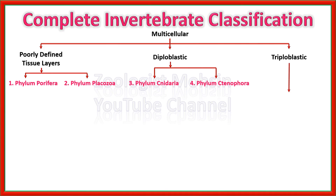Let's move toward the triploblastic classification. Triploblastic organisms are further divided into two categories: protostomes and deuterostomes. Protostomes are those organisms in which the mouth forms first during development, while among deuterostomes, the anus opening forms first during development.